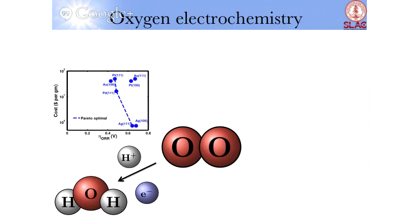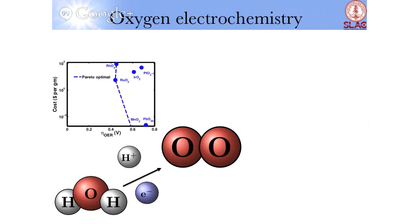Now you can reverse this reaction. Take water and oxidize water to form oxygen. This is oxygen evolution. Same story. There's this 0.4 limit, and anything that is good is expensive. So we try and think about why it is in this case.